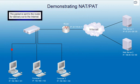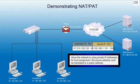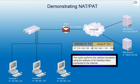The packet is sent to the router for delivery out to the Internet. Since the network is using private IP addresses for host assignment, the source address must be translated to a public address. The router performs the address translation using the address of its interface that is connected to the Internet.